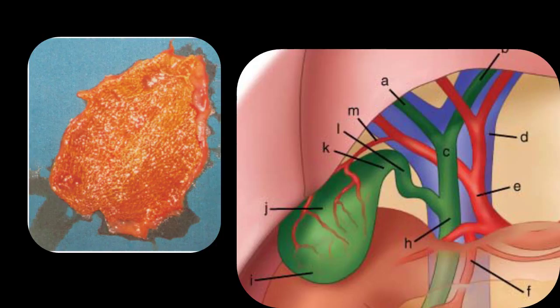Observe these two pictures. The one on your left is an opened up gallbladder and you can see the mucosa is looking almost like a strawberry, representing a strawberry gallbladder. To your right is a diagram representing the portal triad, the gallbladder and the cholecystohepatic triangle.